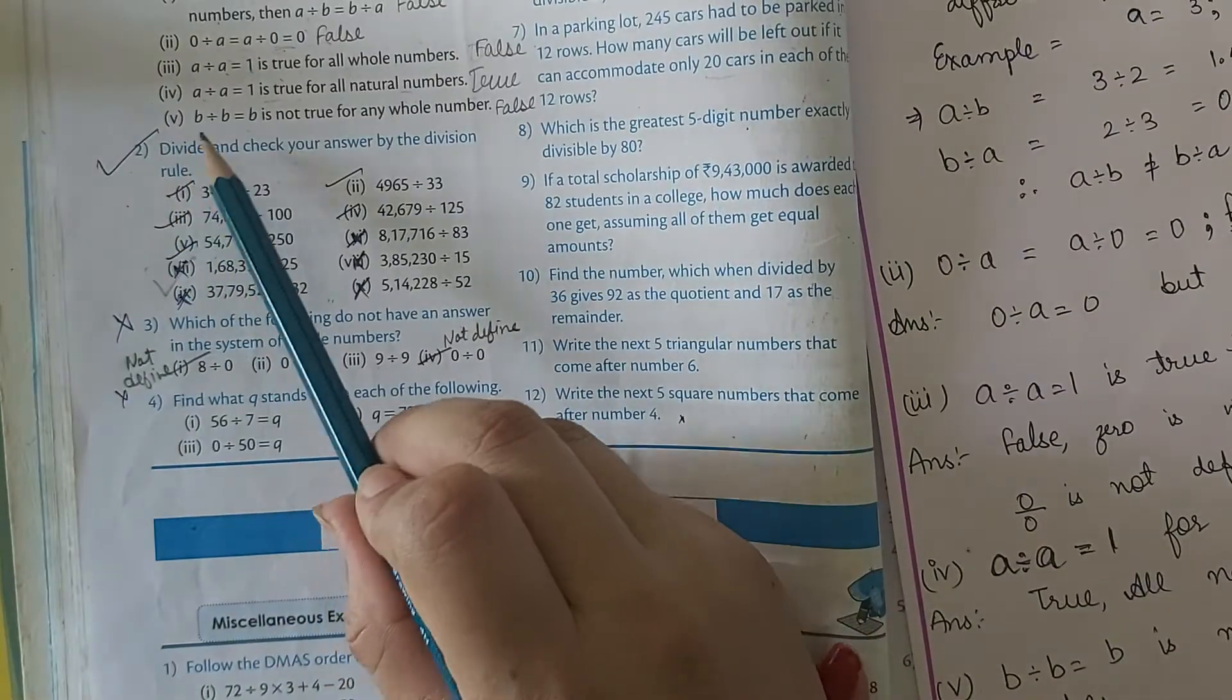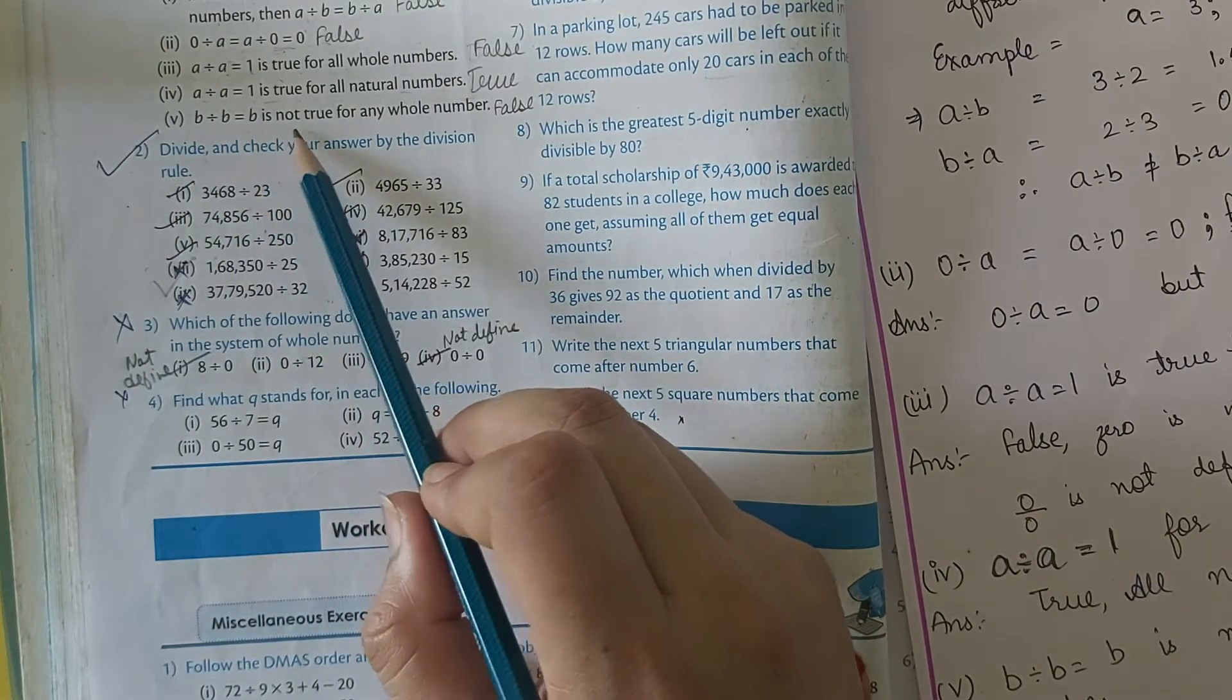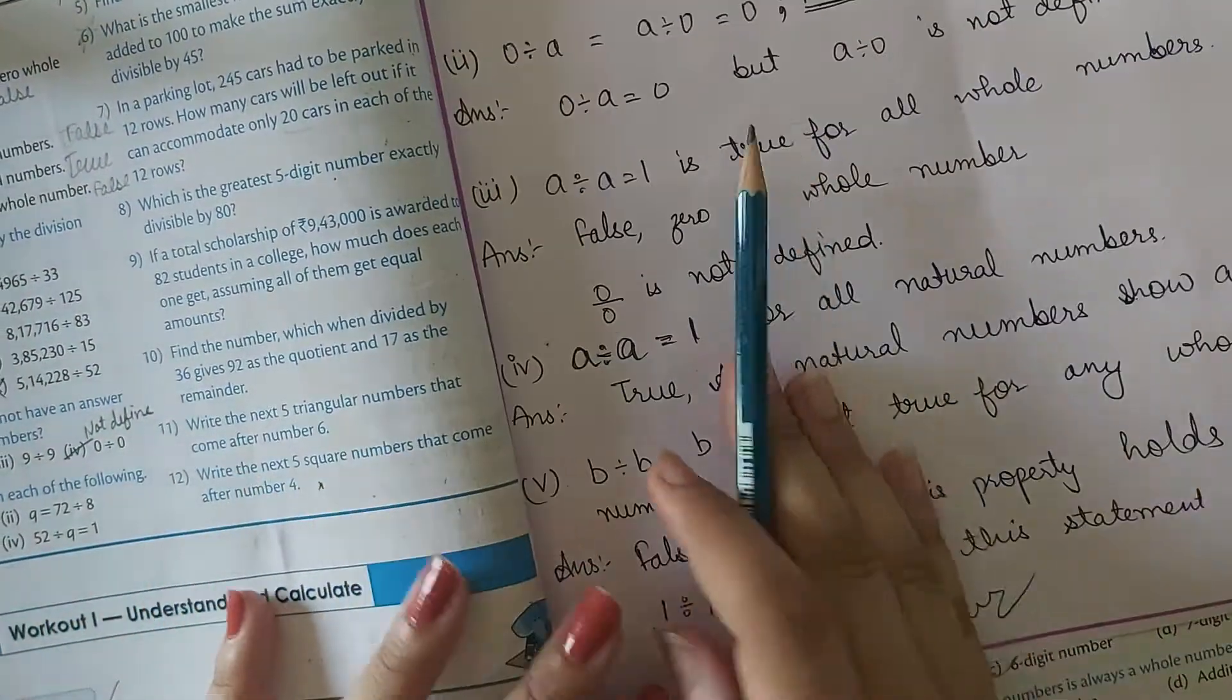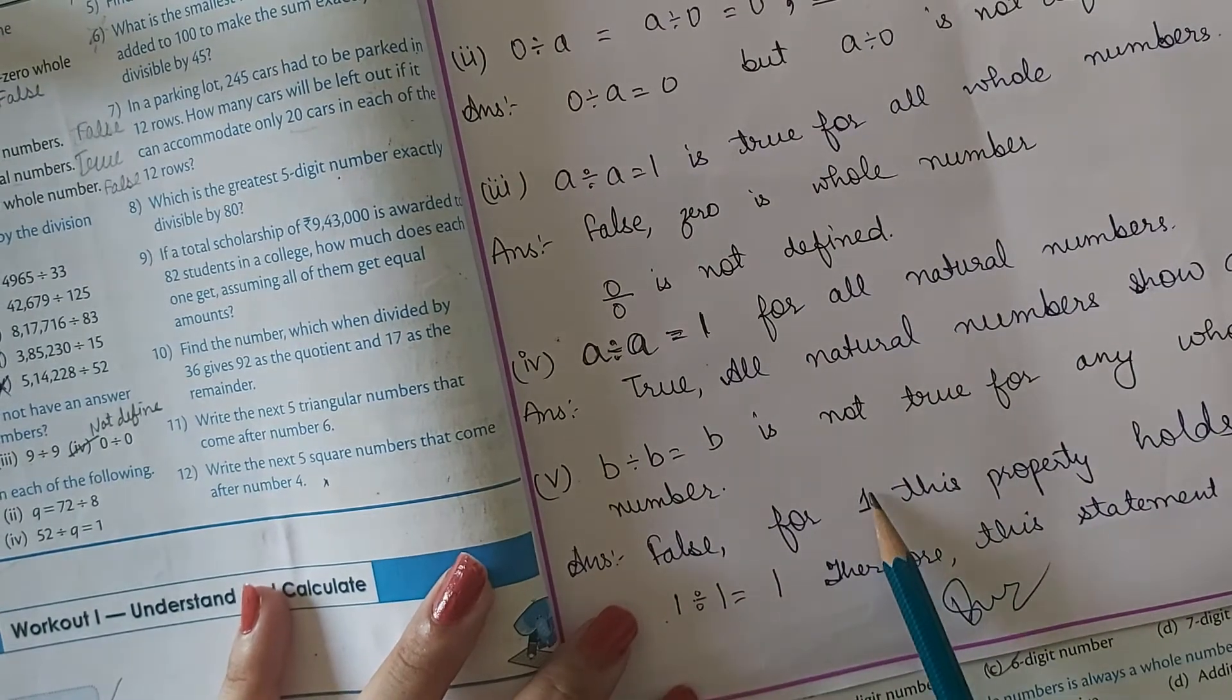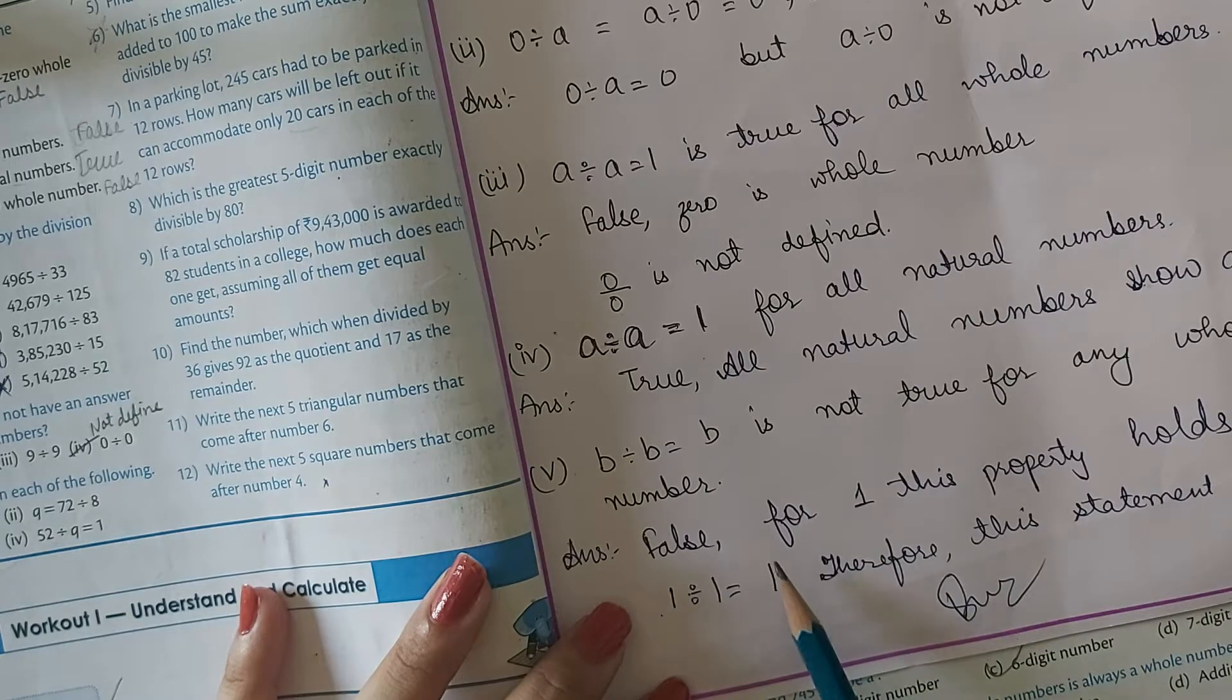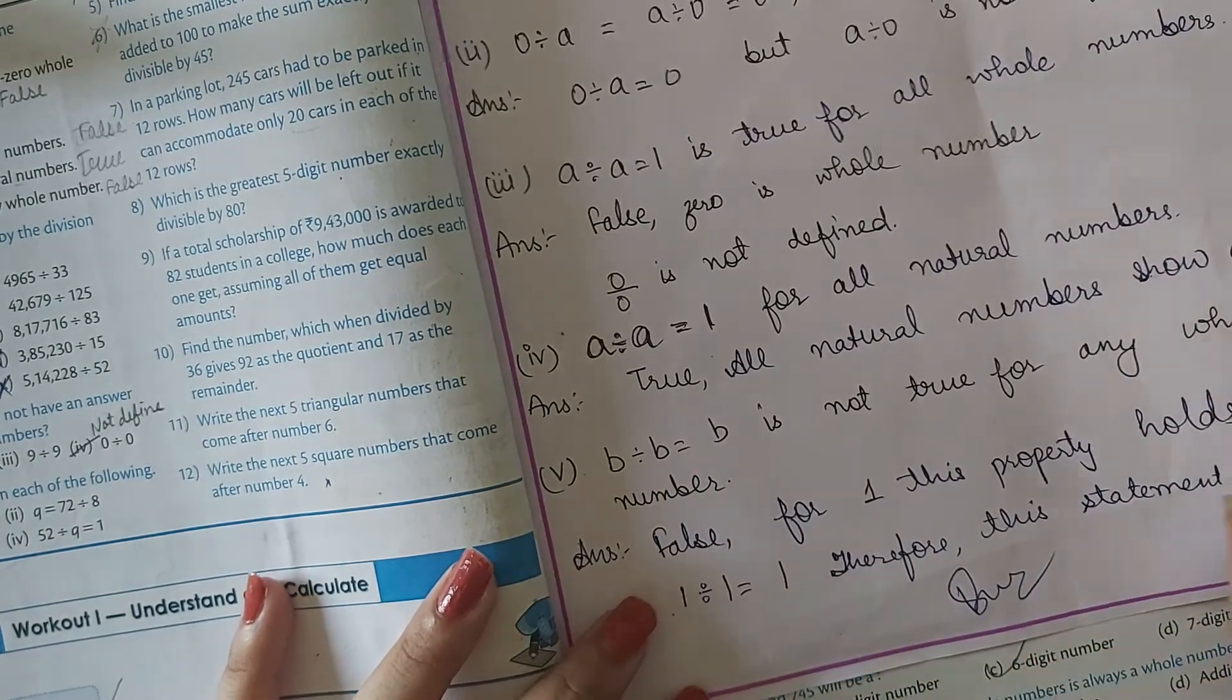Next is B divided by B equals B is not true for any whole number. This is again false. This statement is true for one whole number, that is 1. When we divide 1 with 1, the answer will always come 1. Therefore, this statement given in the question is wrong.